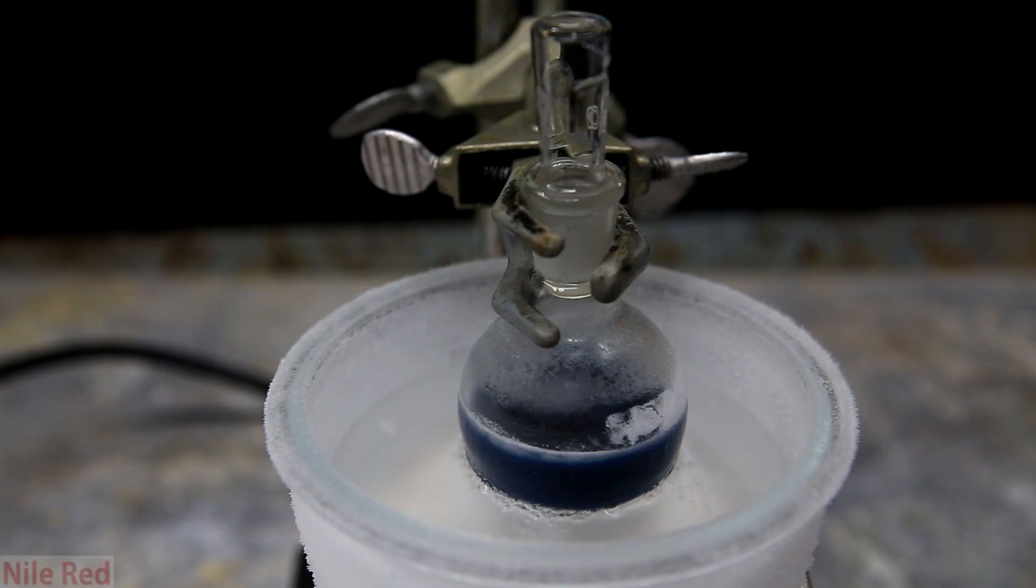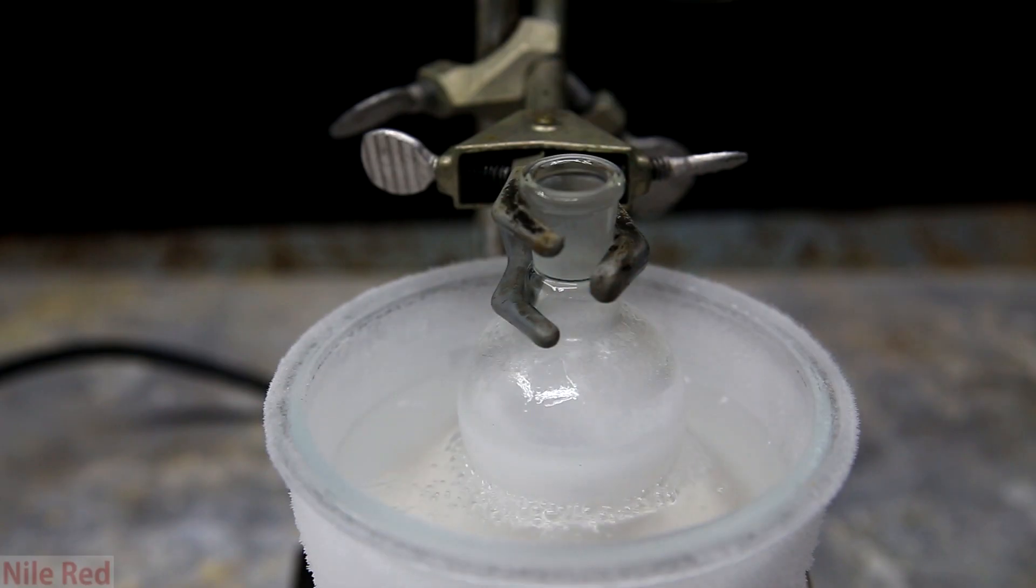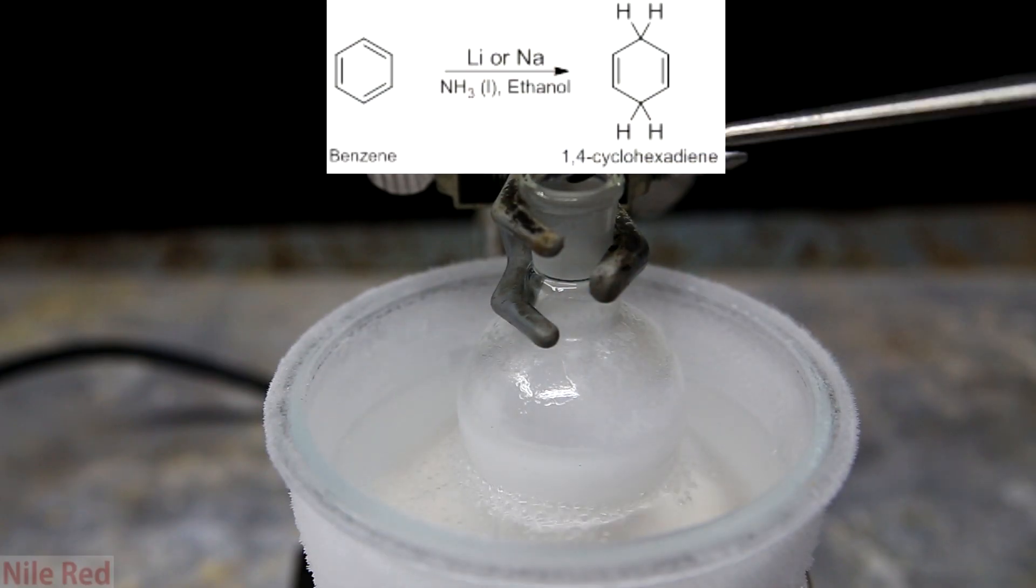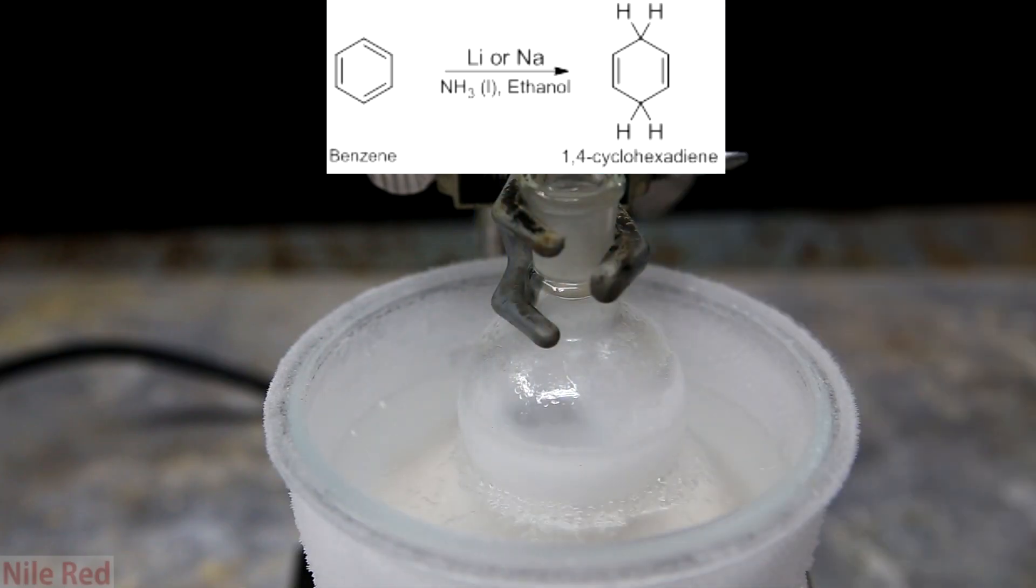The reaction is a little bit complicated and I'm not going to go over the mechanism but if you're interested I'll provide a link in the description. The overall reaction is shown above and we can see the benzene is reduced to form 1,4-cyclohexadiene.